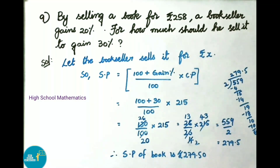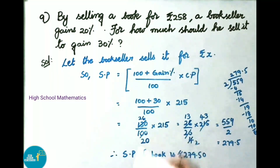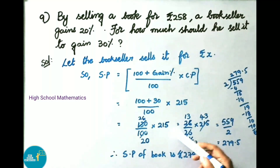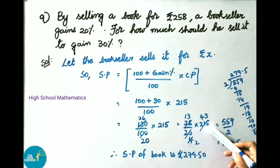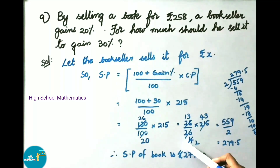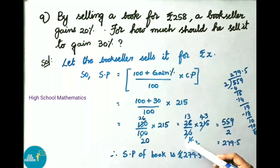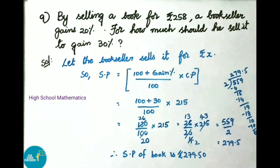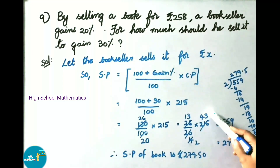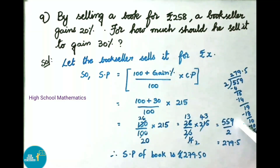Further simplifying: 26 by 20 into 215. 5 divides 20 giving 4, and 5 divides 215 giving 43. Then 2 divides 26 giving 13, and 2 divides 4 giving 2. Multiplying numerator: 13 into 43 equals 559, divided by 2.